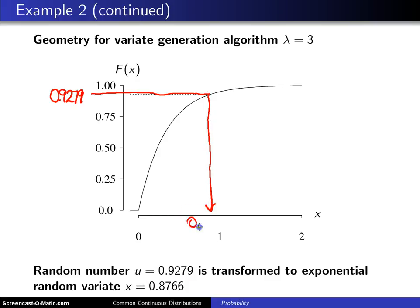the exponential random variate that is generated is 0.8766. So again, you'll notice that as you get large values of the uniform 0,1, you get large variates. And that is something known as a monotone random variate generator.